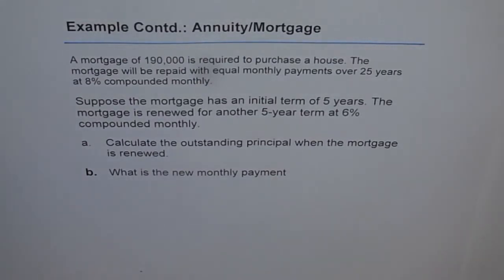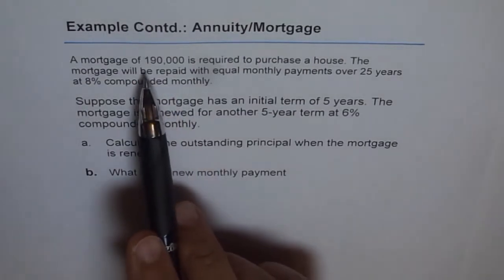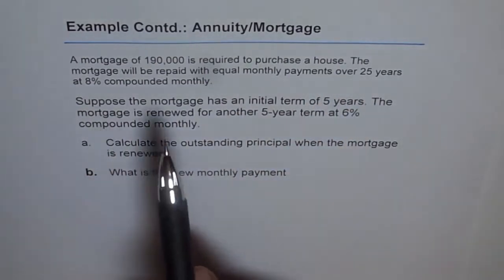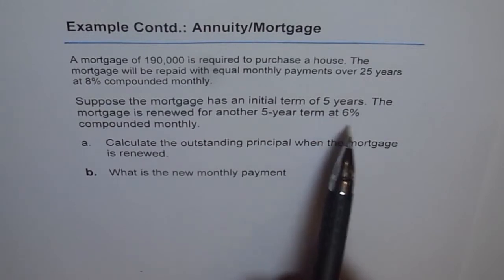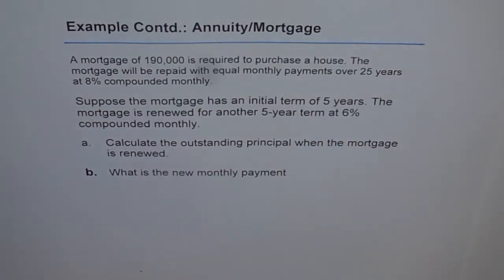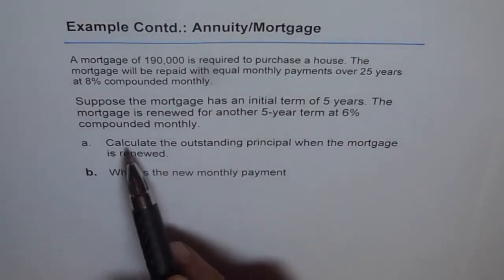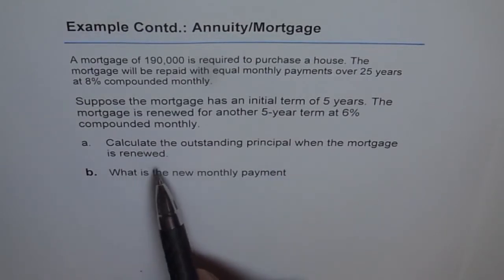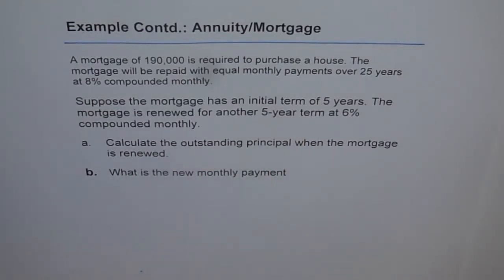The example here is: suppose the mortgage has an initial term of 5 years. That means the mortgage on $190,000 at 8% compounded monthly over 25 years is renewed for another 5-year term at 6% compounded monthly. Part A: calculate the outstanding principal when the mortgage is renewed after 5 years. Part B: what is the new monthly payment?